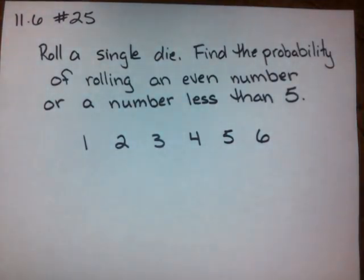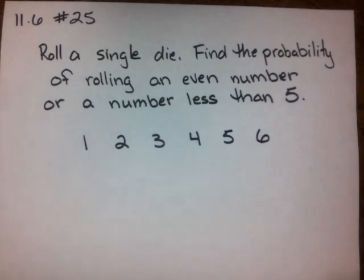Let's take a look at number 25 from 11.6. What they're telling us to do is if we roll a single die, we want to find the probability of rolling an even number or a number less than 5.